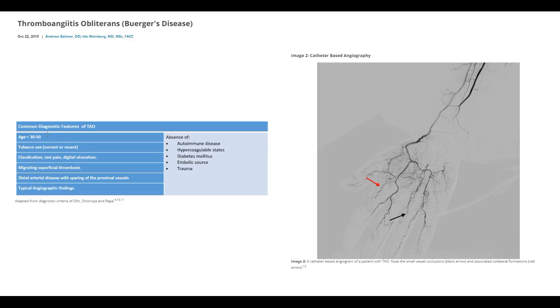Here we can see diagnostic criteria. Buerger disease typically affects people 30 to 50 years old. The major predisposing factor is tobacco use. The major clinical symptoms are claudication, rest pain, and digital ulceration.